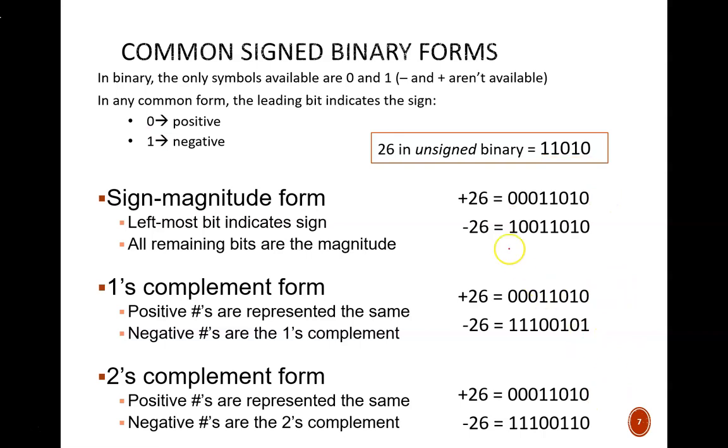In sign-magnitude form, the leading bit has no weight associated with it. Instead, it is simply used to indicate the sign. Zero is positive, one is negative. So writing negative 26 is easy. Simply take the code for positive 26 and change the leading bit. All other bits remain the same.